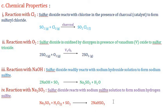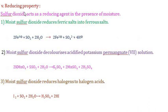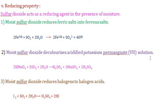The fifth and most important chemical property is the reducing property of SO2. Sulfur dioxide acts as a reducing agent in the presence of moisture. It reduces ferric ions (Fe³⁺) to ferrous ions (Fe²⁺), producing sulfate ions and H⁺ ions. It also reduces potassium permanganate (KMnO4) to manganese sulfate (MnSO4), decolorizing the acidic KMnO4 solution.